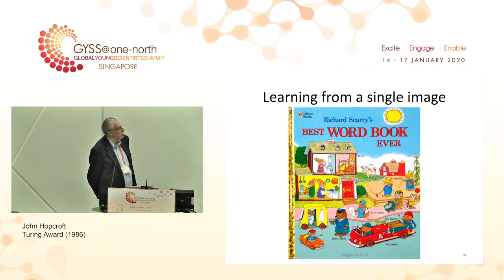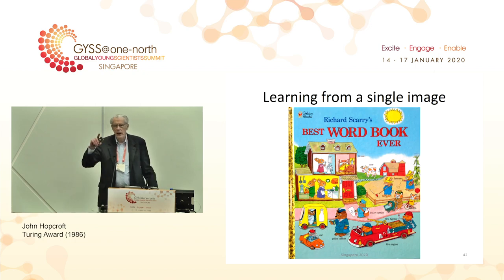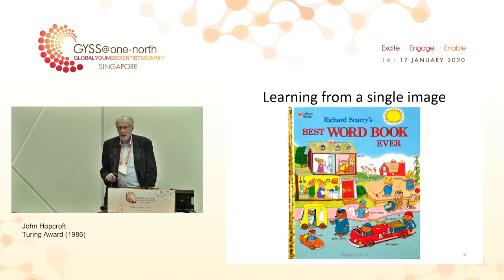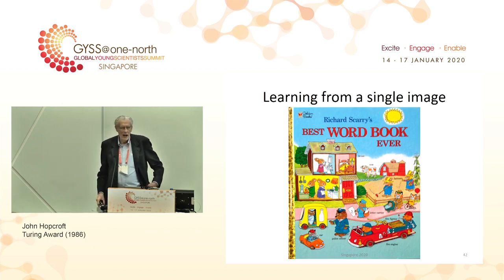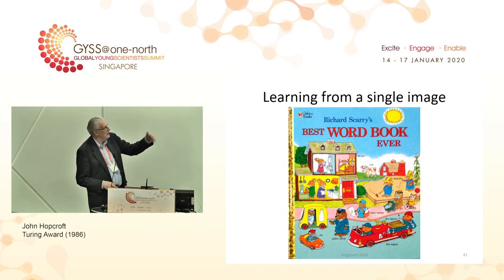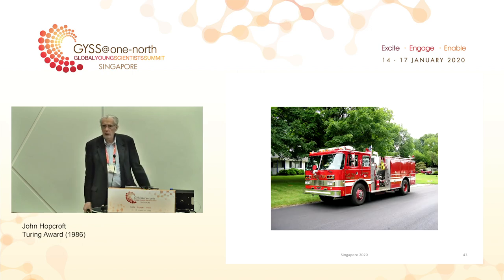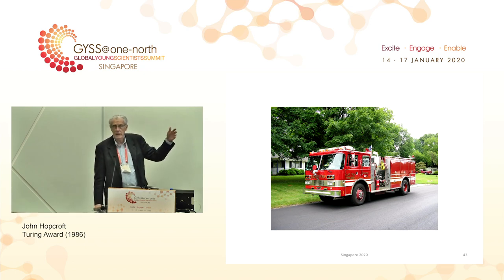One day we were out for a walk and she said, 'Dad, fire engine.' The only picture of a fire engine in that book is the one on the cover. From a single image, she learned the concept of fire engine, even though the real fire engine looked quite different from the picture. The question is how did she do that? It's possible that a child in the first few years sees billions of pictures and learns how to classify pictures — that's what they learn. There's a lot of research now on how the brain develops; in the first two years of a child's life, the brain learns how to learn.